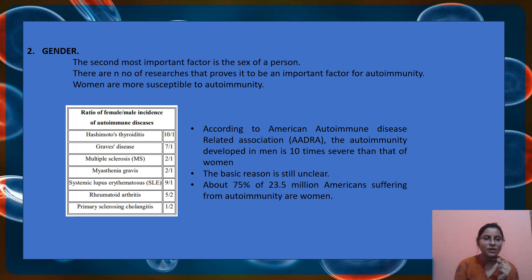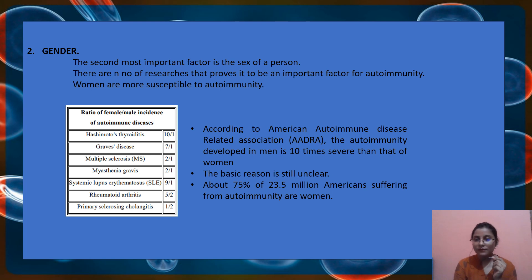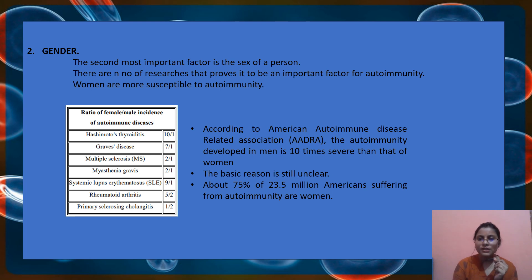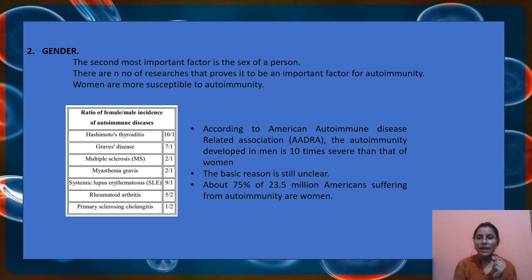For primary sclerosis the ratio is 1:2, where males are more affected. Importantly, autoimmune disease developed in males is almost 10 times more severe than in women. But the predisposition — the chance of occurrence — is greater in women. If a male does get affected, the severity of the disease increases significantly. For example, males affected by rheumatoid arthritis experience more pain than women. About 75% of the 23.5 million Americans suffering from autoimmune diseases are women.